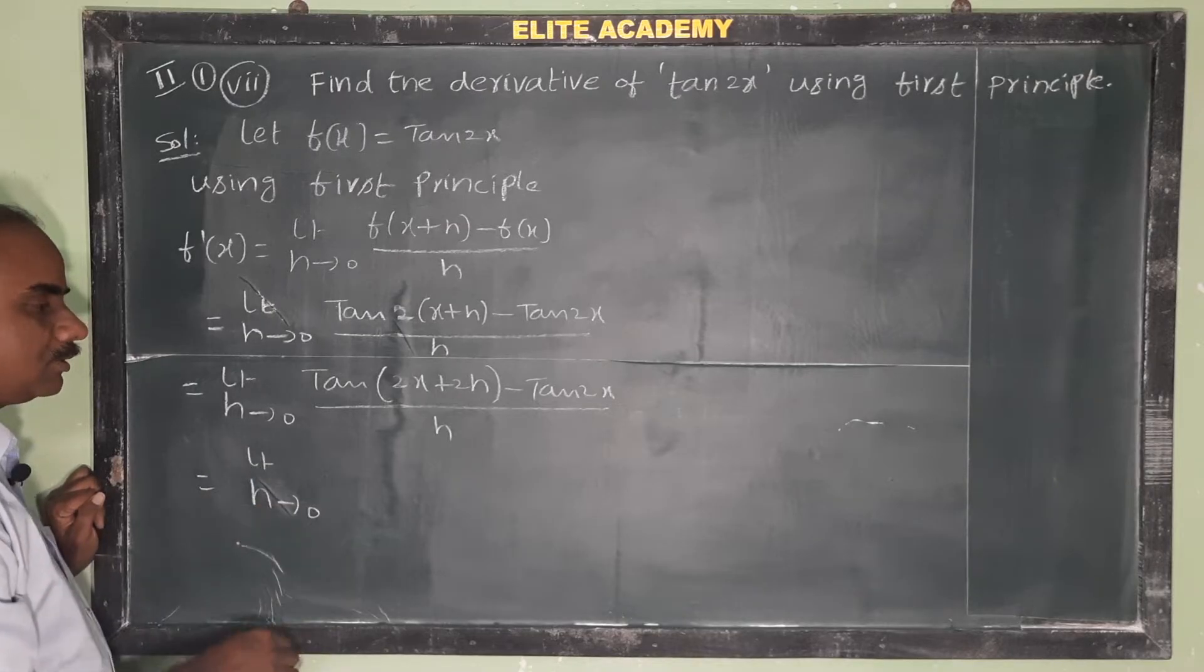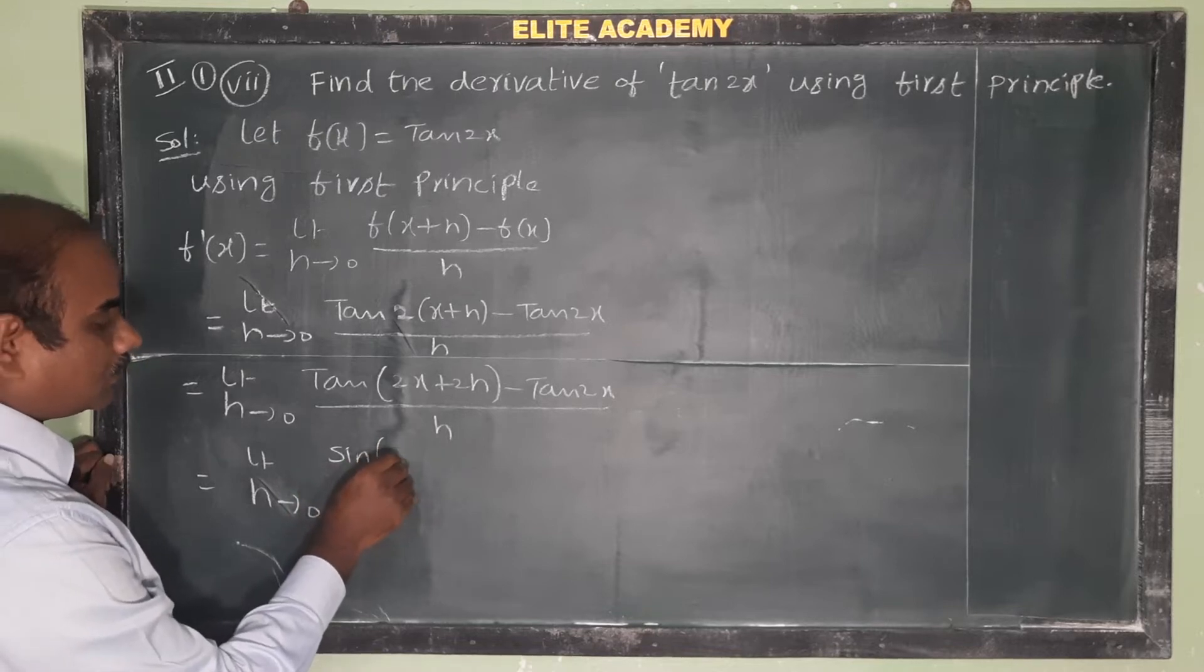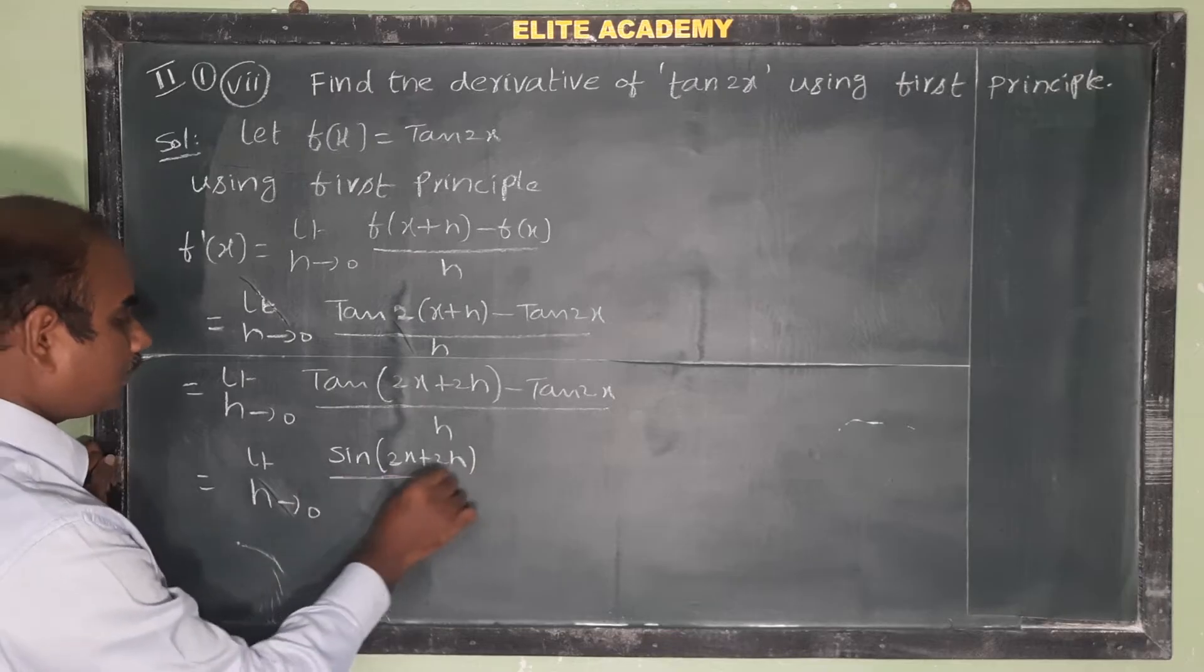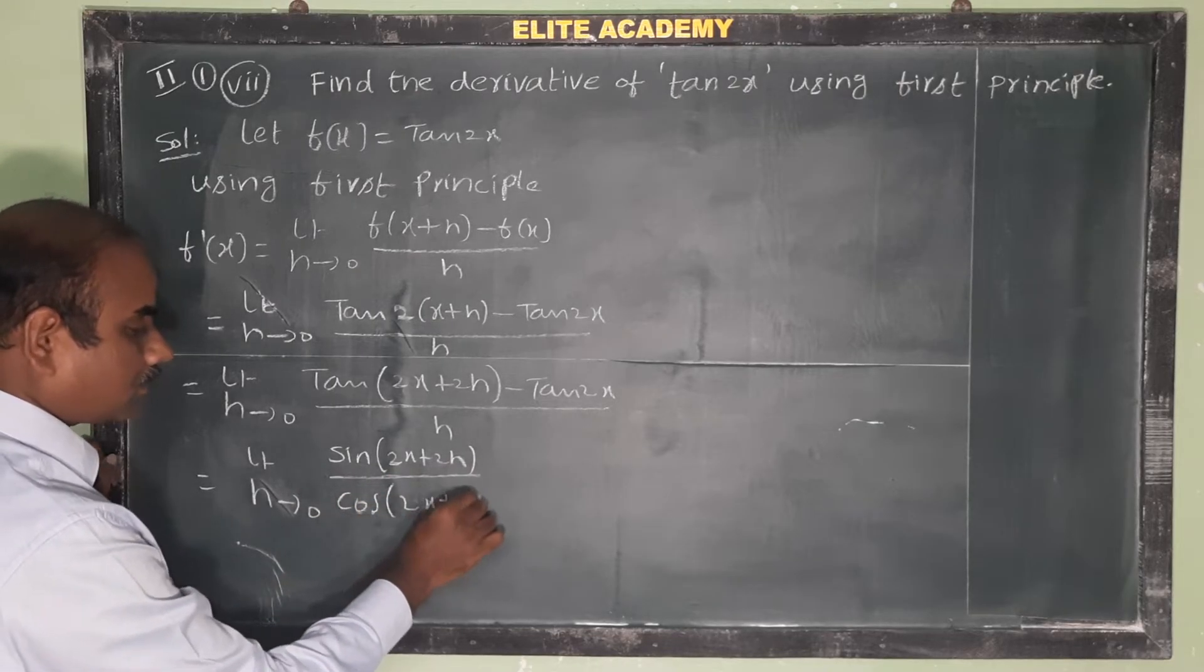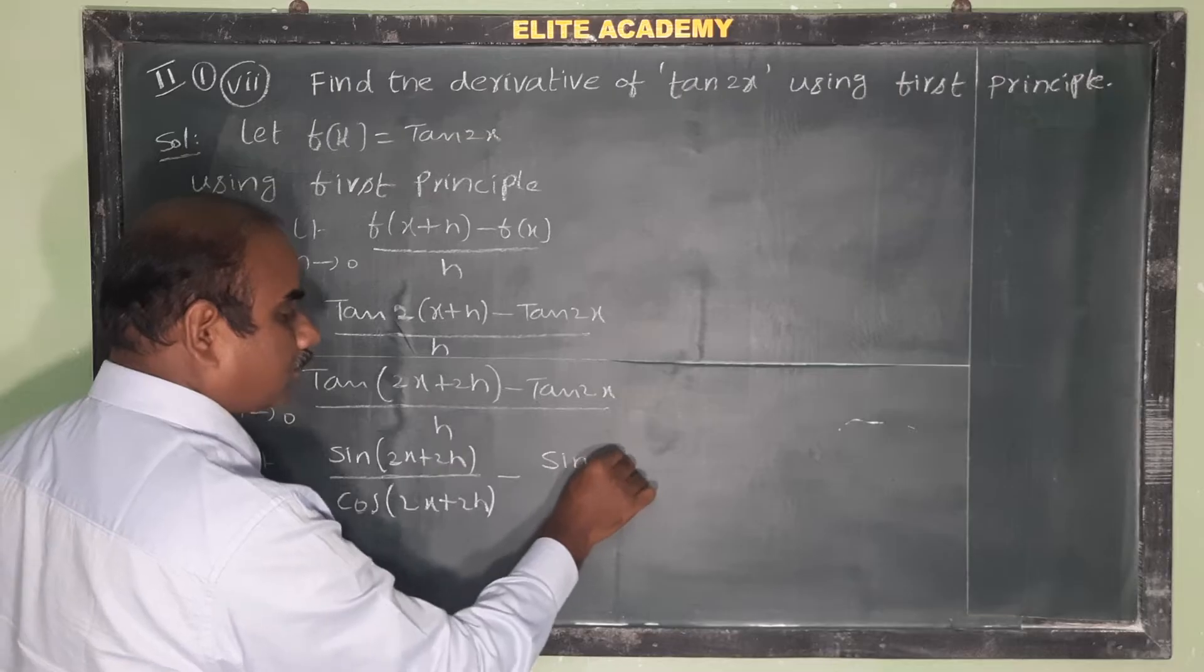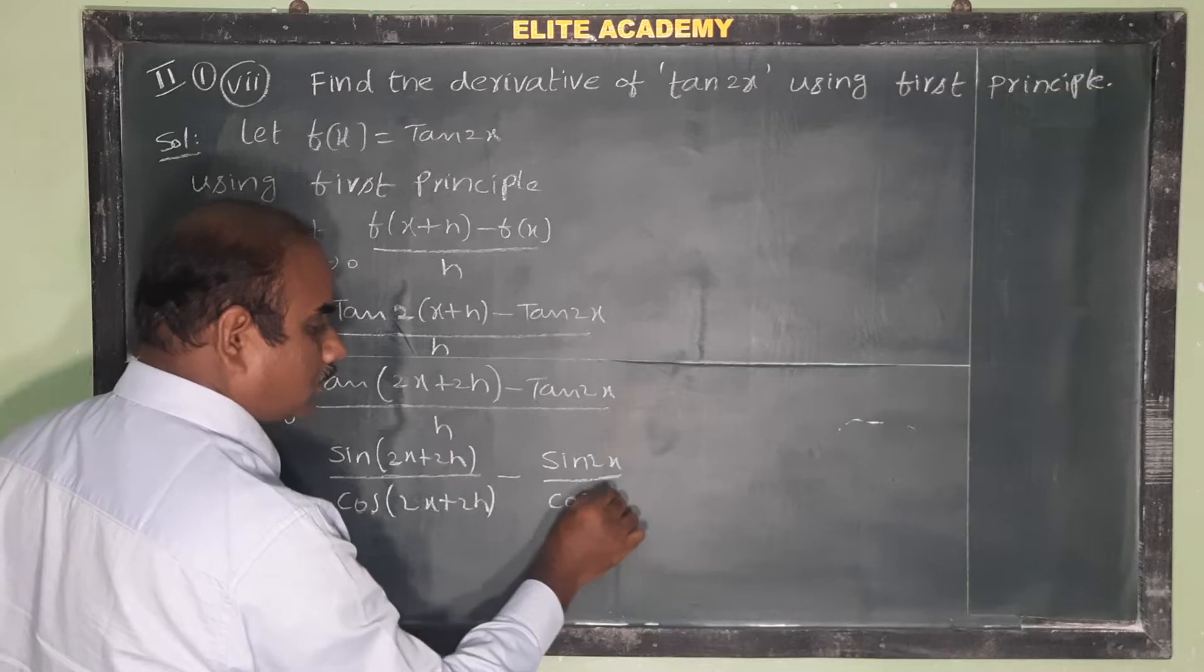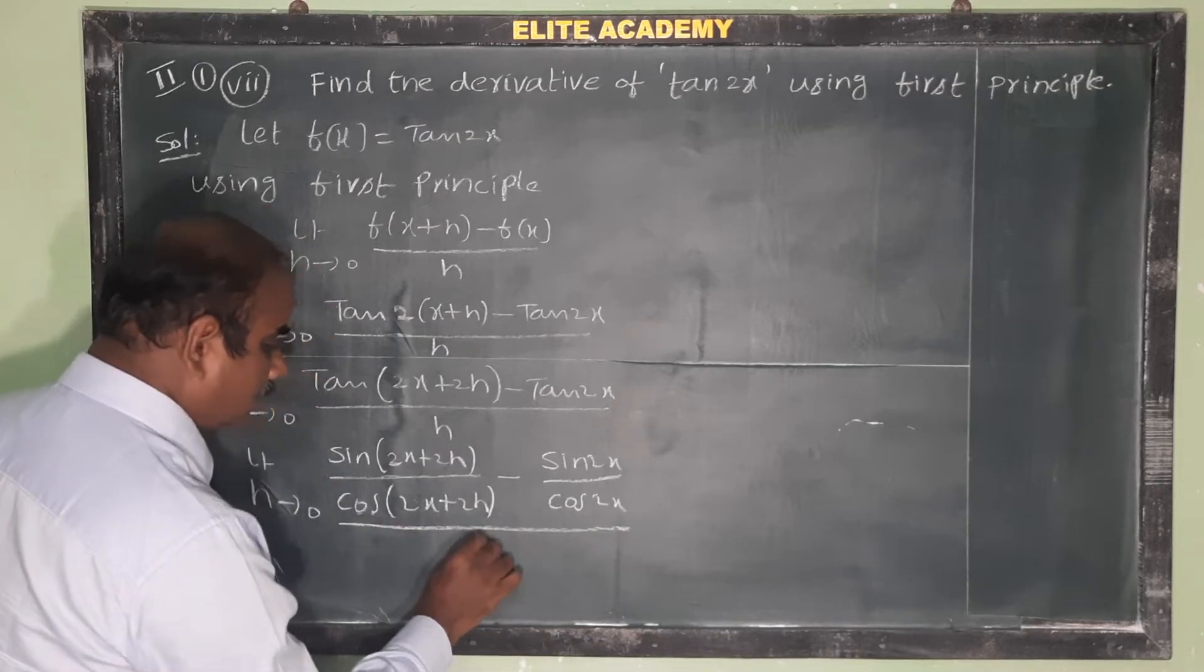Now write tan as sin by cos. So tan(2x plus 2h) is sin(2x plus 2h) by cos(2x plus 2h), minus tan 2x means sin 2x by cos 2x, whole by h.